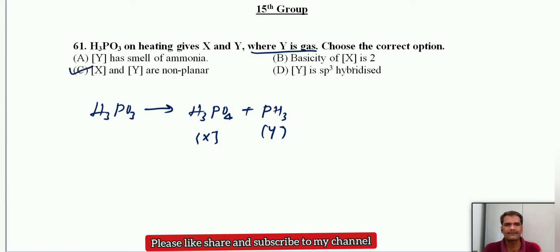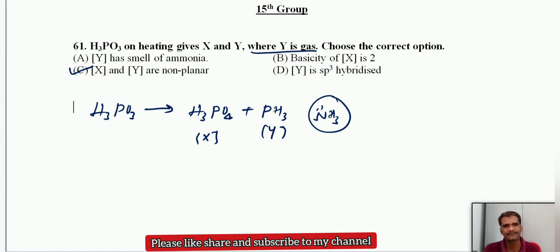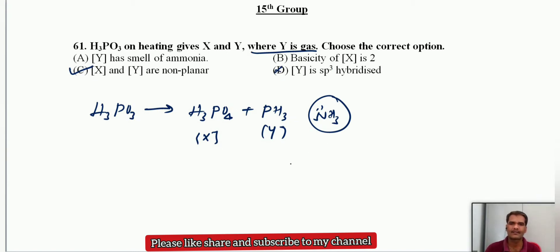Checking option D: Y is sp3 hybridized. We know that among 15th group hydrides, only ammonia can undergo hybridization. There is no hybridization for the remaining hydrides — phosphine, arsine, stibine, bismuthine — according to Drago's rules. So option D is also not correct. Therefore the answer is option C.